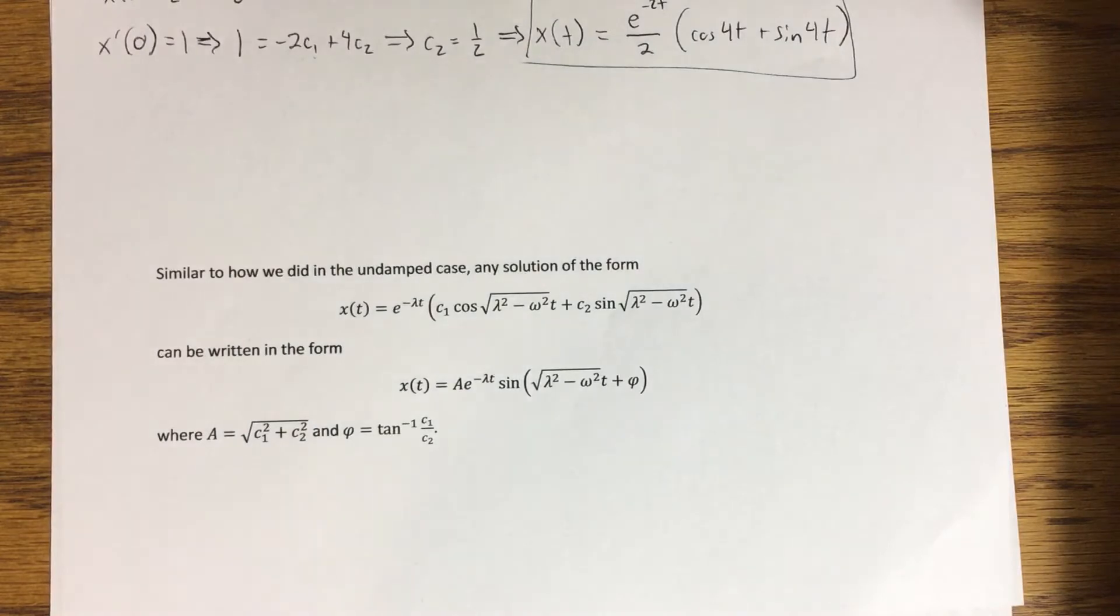Now, A no longer represents the amplitude because this is not a perfect sine wave. Again, it's that diminishing sine wave, but we can still make use of this form, which we will in an example.